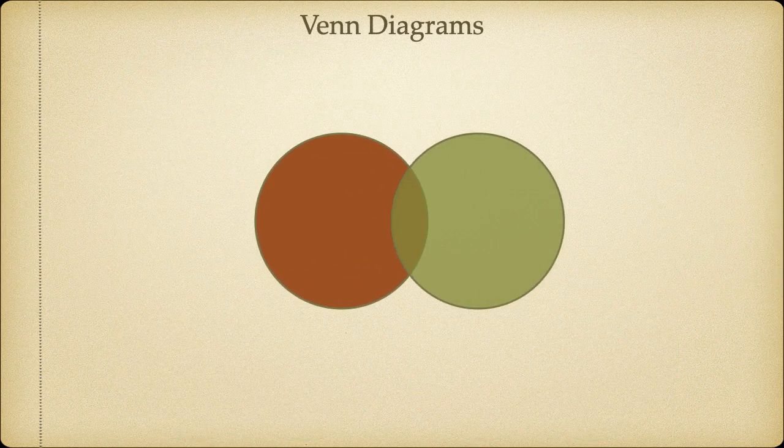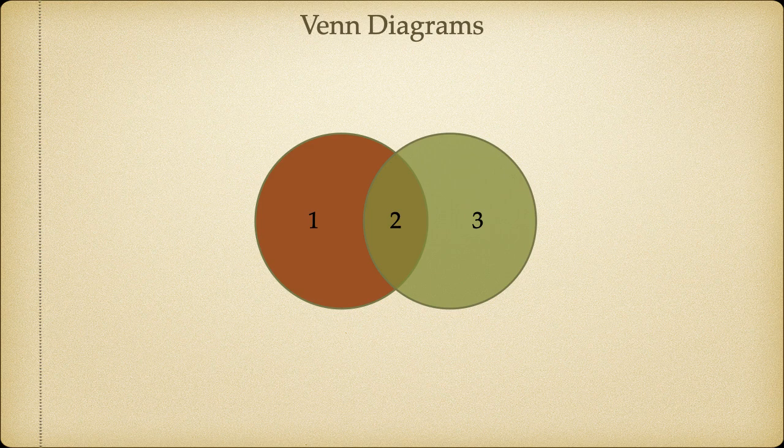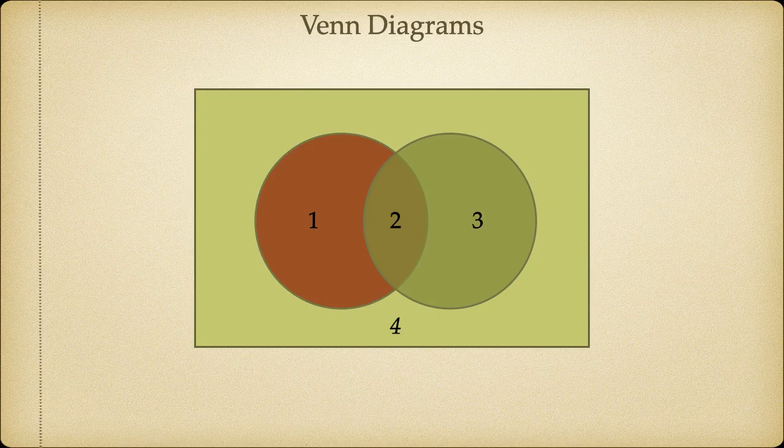There's one final thing to note about the regions of categorical propositions. We've learned about regions 1, 2, and 3. This exhausts all the areas within the two domains of the subject and predicate. But what about everything that's outside of S and P? That is, suppose we wanted to say something about everything that is neither part of the subject or the predicate class. For that, we'd need another region. As a convention, we adopt adding a universal domain, a rectangle, that includes both the subject and the predicate.